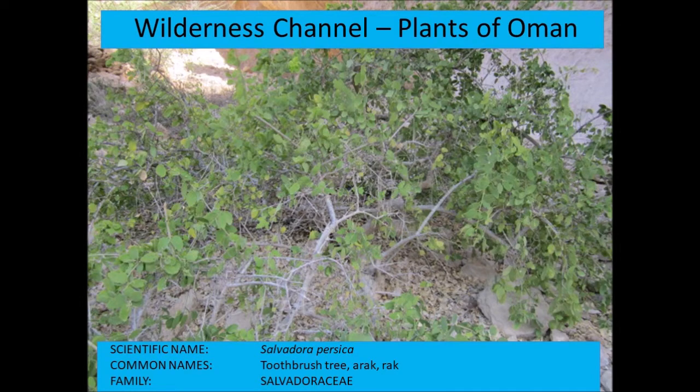Salvadora persica — the toothbrush tree. This is a spreading bush with a very characteristic smell. The young twigs are broken off, chewed, and used as a kind of toothbrush in Dhofar by the local Jebali tribesmen.